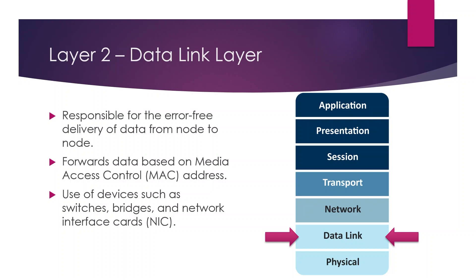Layer two is the Data Link layer, responsible for error-free delivery of data from node to node. It forwards data based on the MAC address. Devices at this layer include switches, bridges, and network interface cards. Data is delivered from one device to the very next device in the path — not the final destination.